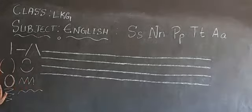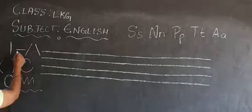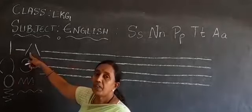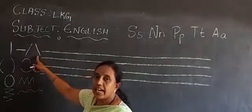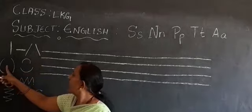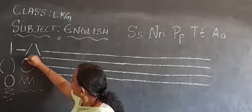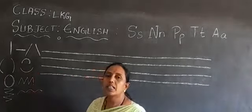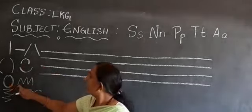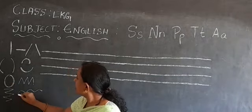Have you understood? See here again. This is a standing line, this is a sleeping line, this is a left slant line, this is a right slant line, this is a left half circle, this is a right half circle, this is an up curve or up half circle, this is a down curve, this is a circle, this is zig-zag — and this is also zig-zag. And this is a curve.